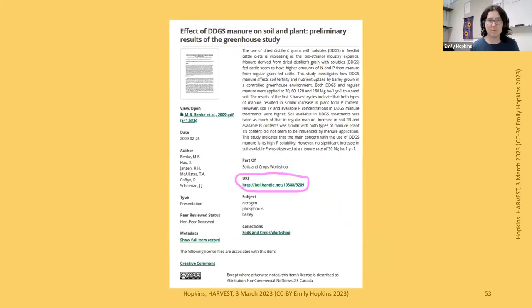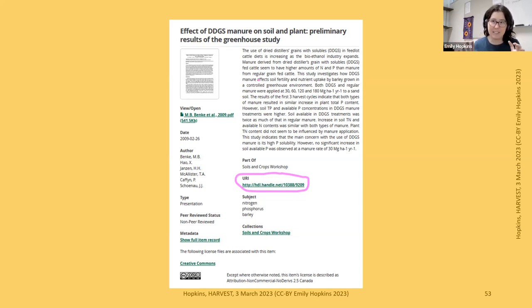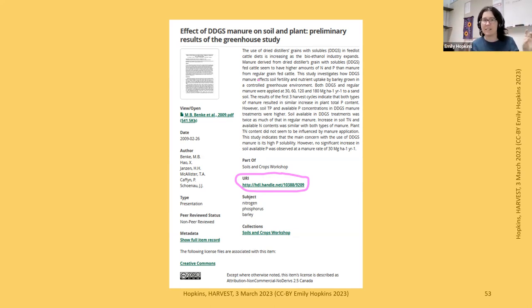Once complete, you'll see the thumbnail, the link to the article, all the metadata, and the Creative Commons logo. Highlighted there is the URI — Uniform Resource Identifier — which functions similarly to a DOI. The address registered with handle.net is what will continue to point to this resource long-term, even if the university's hosting URL changes. If you need a link for your CV or website, that's the one to use.